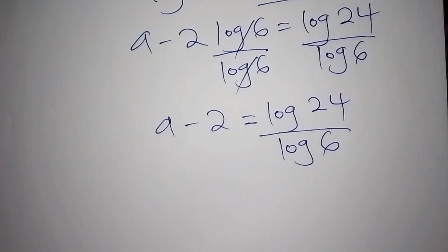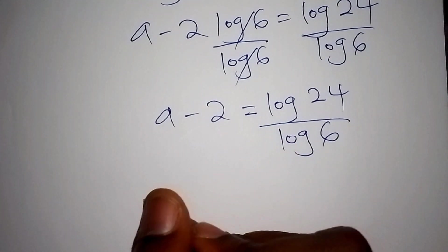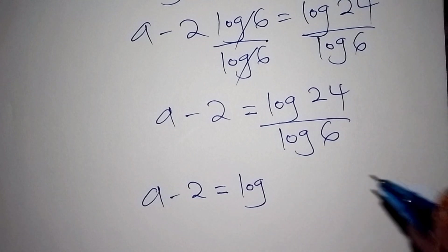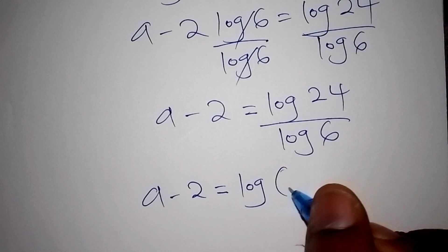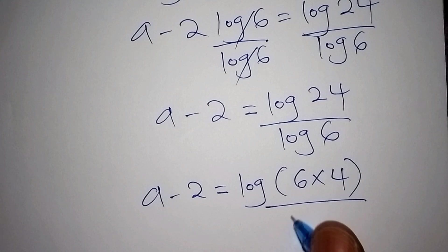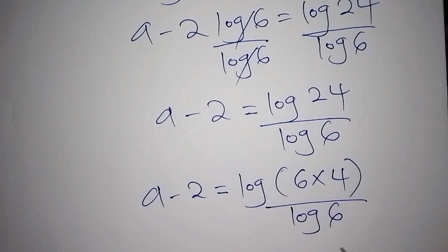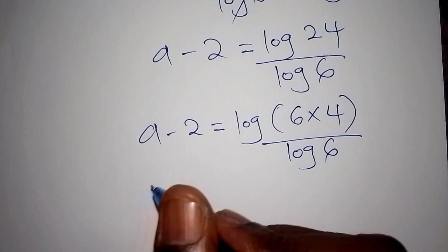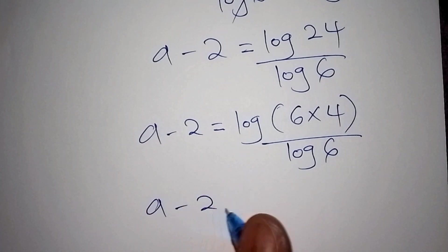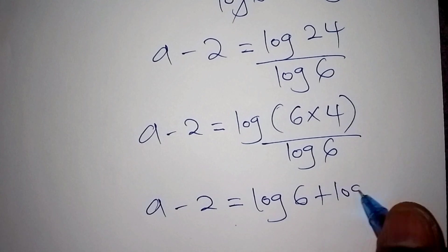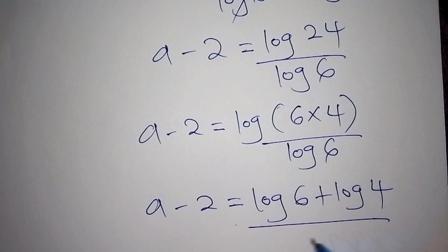We proceed and say that a minus 2 is equals to log 24, which can also be written as log of (6 multiplied by 4), all over log 6. According to the laws of logarithms, we can say that a minus 2 is equals to log 6 plus log 4, all over log 6.